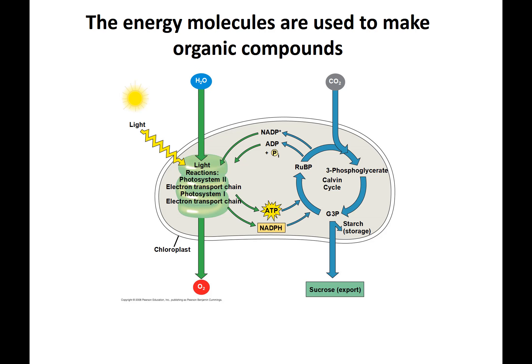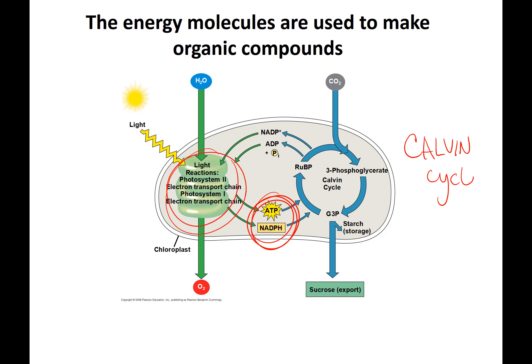To summarize the light reactions: Photosystem II, Photosystem I, and electron transport chains work together. The point of the light reactions is to make energy molecules that feed the Calvin cycle. In the overall equation, water comes in and oxygen is produced in the light reactions. CO2 comes in and carbohydrates are produced in the Calvin cycle.